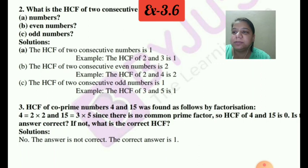Now next is question number 3. That HCF of 2 co-prime numbers 4 and 15 was found as follows. We have done the prime factorization of 4 which is 2 into 2, and 15 can be written as 3 multiply by 5. So it says since there is no common prime factor, so HCF of 4 and 15 is 0. Is the answer correct? If not, then what is the correct HCF?